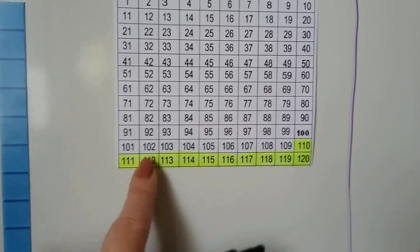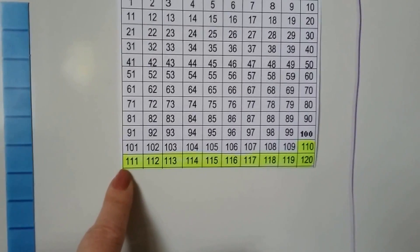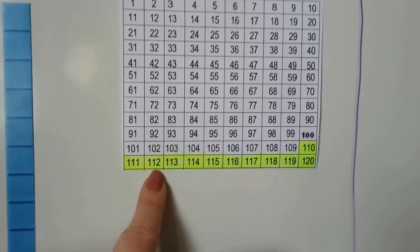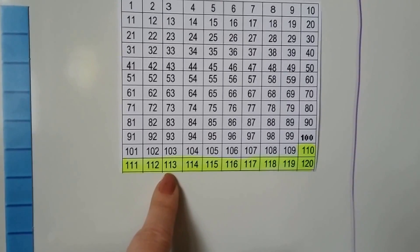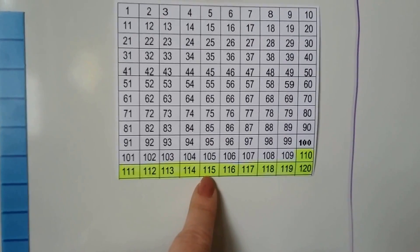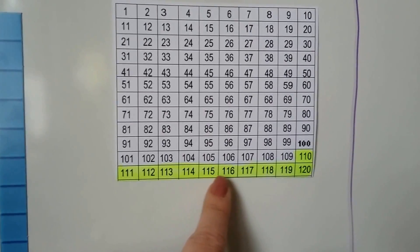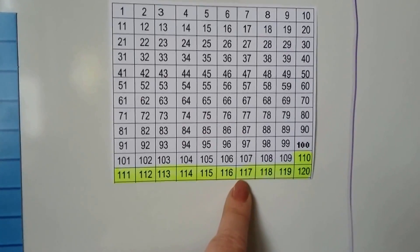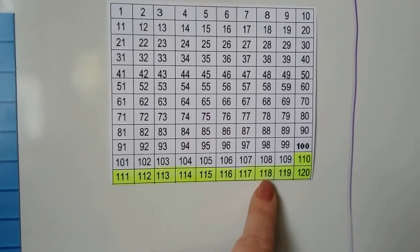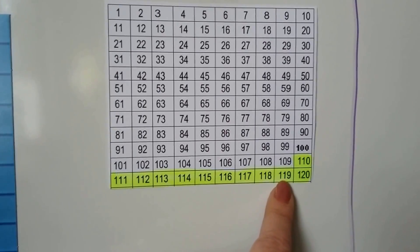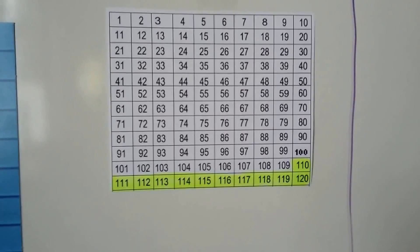The next number is 111, then 112, 113, 114, 115, 116, 117, 118, 119, 120.